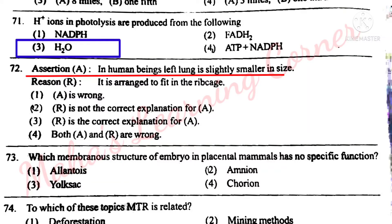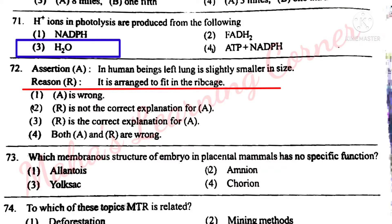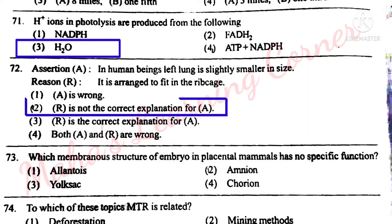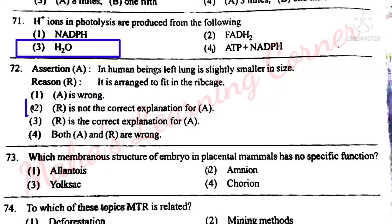Next question. Assertion A: In human beings, the left lung is slightly smaller in size – this is correct. Reason R: It is arranged to fit in the rib cage. Correct answer: Option 2 – R is not the correct explanation for A. The lung towards the left is slightly smaller to make space for our heart. So option 2 is the correct answer.